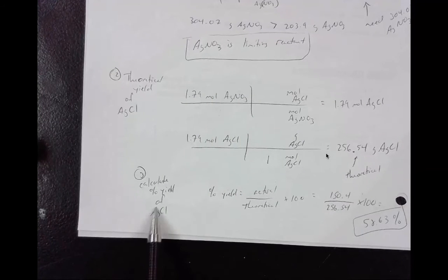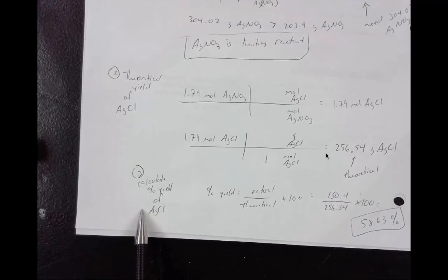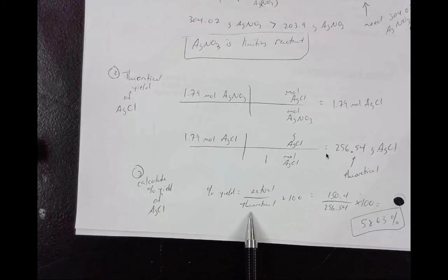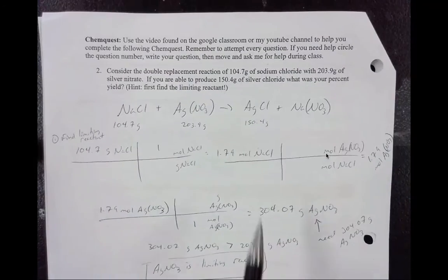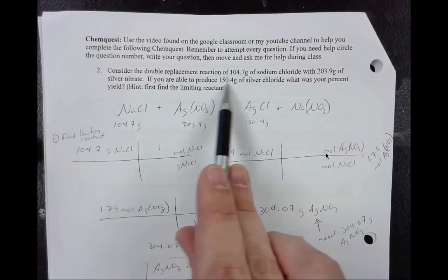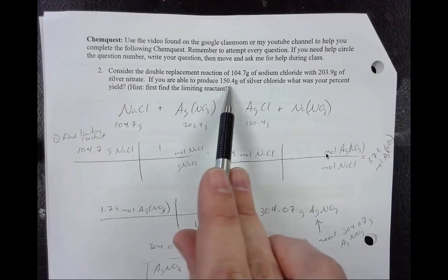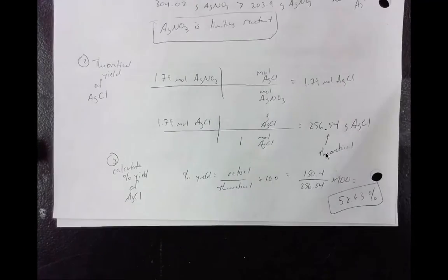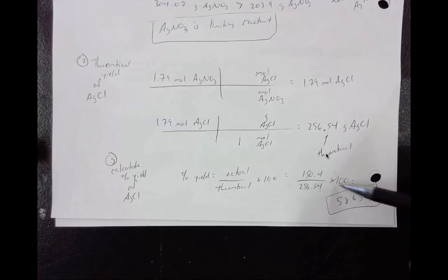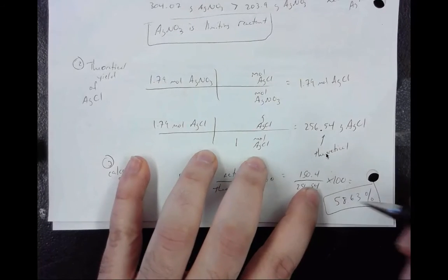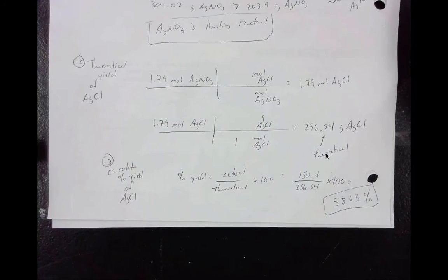So now we can go down to the calculated percent yield of silver chloride. So if we calculate the percent yield, it's the actual over the theoretical times 100. So to find the actual, we just have to look back up at the problem. And it tells us it produces 150.4 grams of silver chloride. So that's what goes on top. What we calculated goes on the bottom, multiplied by 100. So we find out 58.63%.